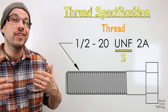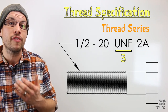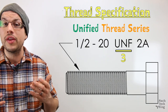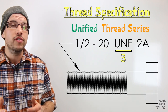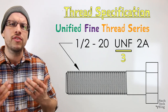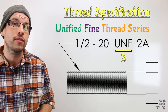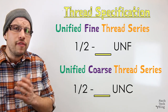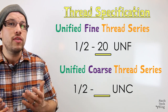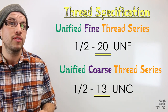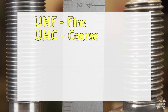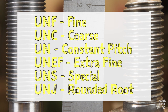The third piece of information is the thread series. In our case, we have UNF threads. The UN stands for unified, which is the designation for standard V threads with inch sizes used in the United States. The F stands for fine. Unified threads have standardized numbers of threads per inch for different major diameters. Fine threads have more threads per inch than coarse threads, which are specified with a C. For a half inch major diameter like our bolt, the fine series has 20 threads per inch while the coarse series has 13. For threads with a three quarter inch major diameter, it's 16 threads per inch for fine threads and 10 threads per inch for coarse threads. Unified fine and coarse are the most common thread series, but there are a few others as well.